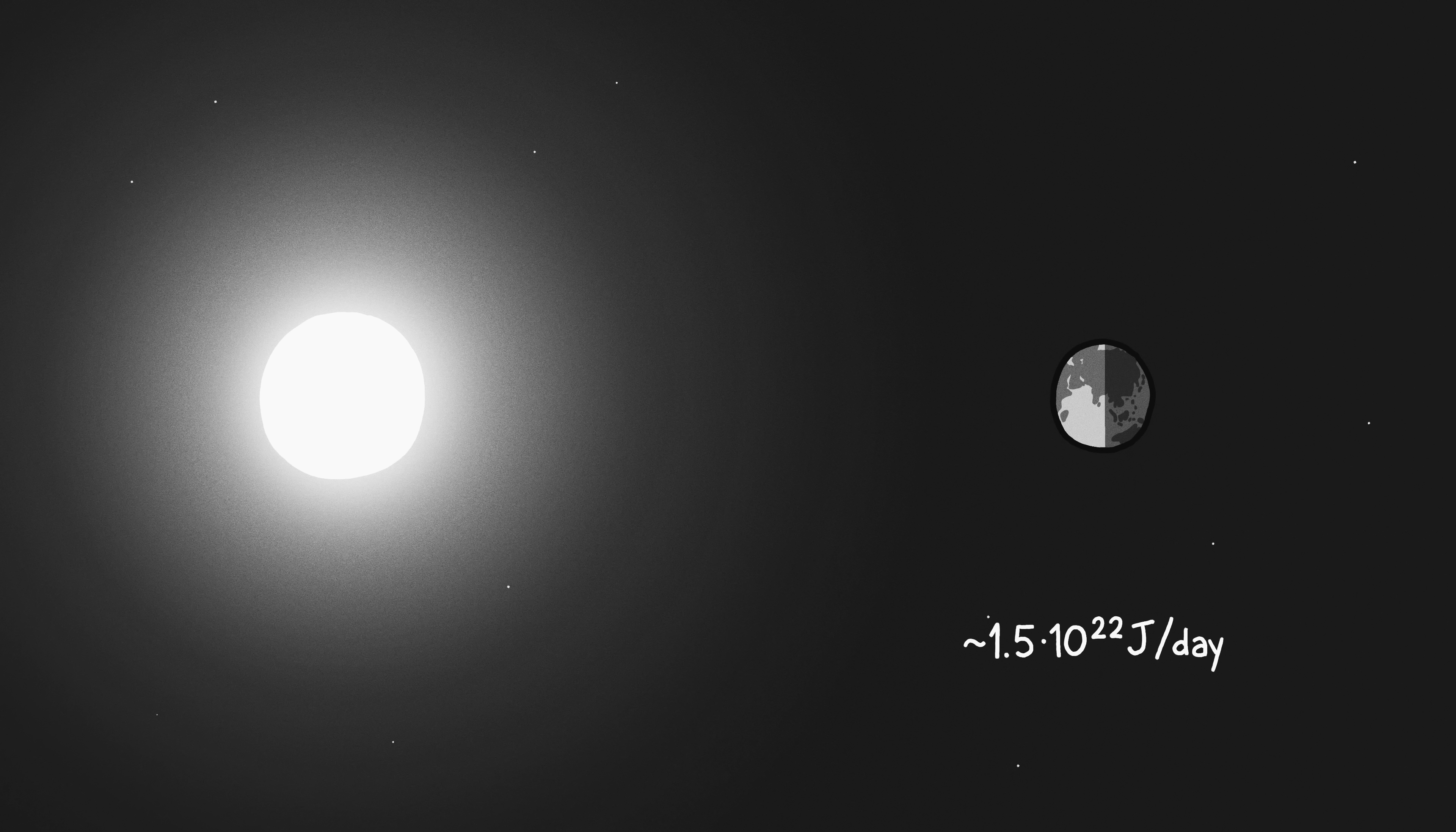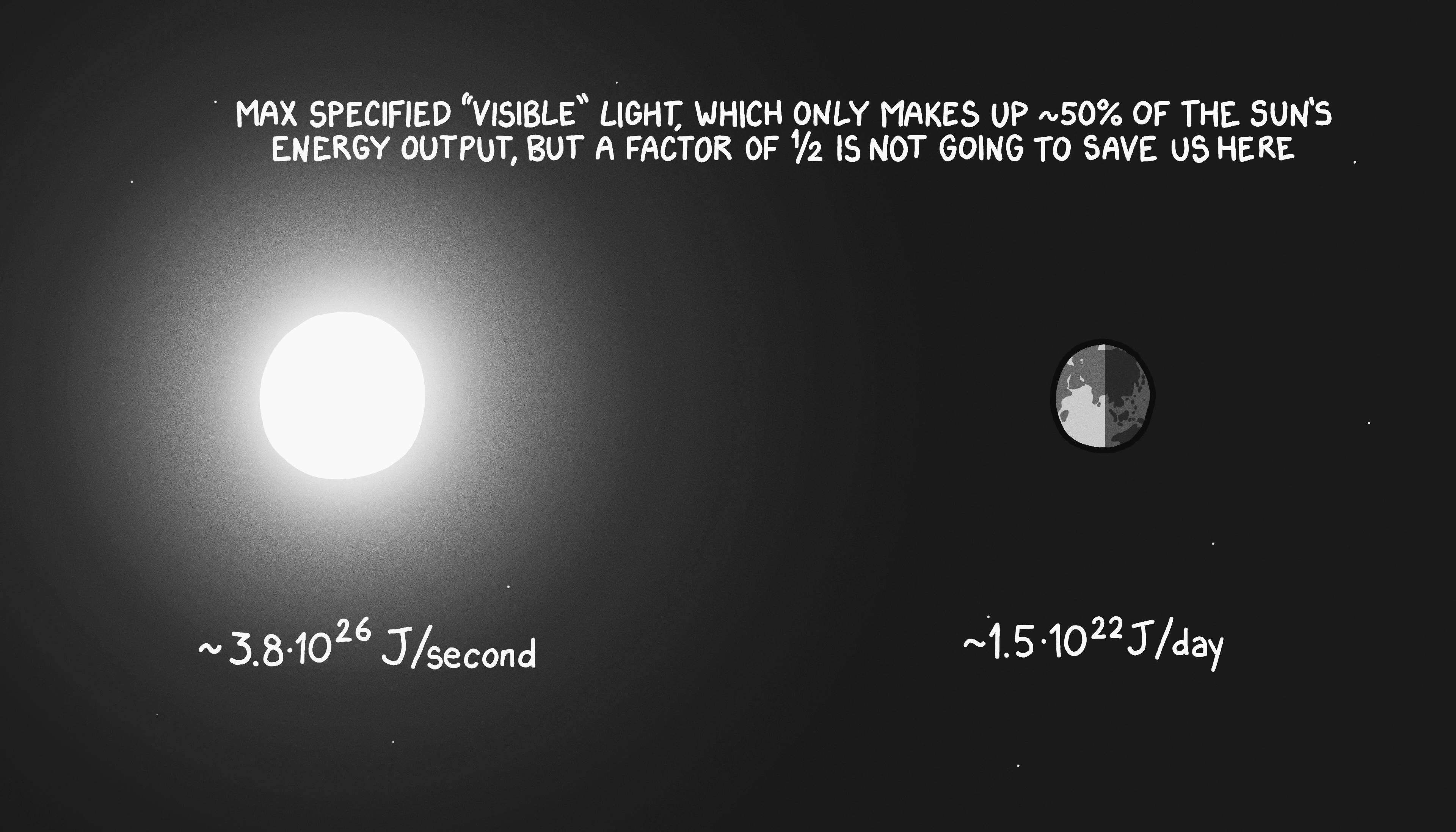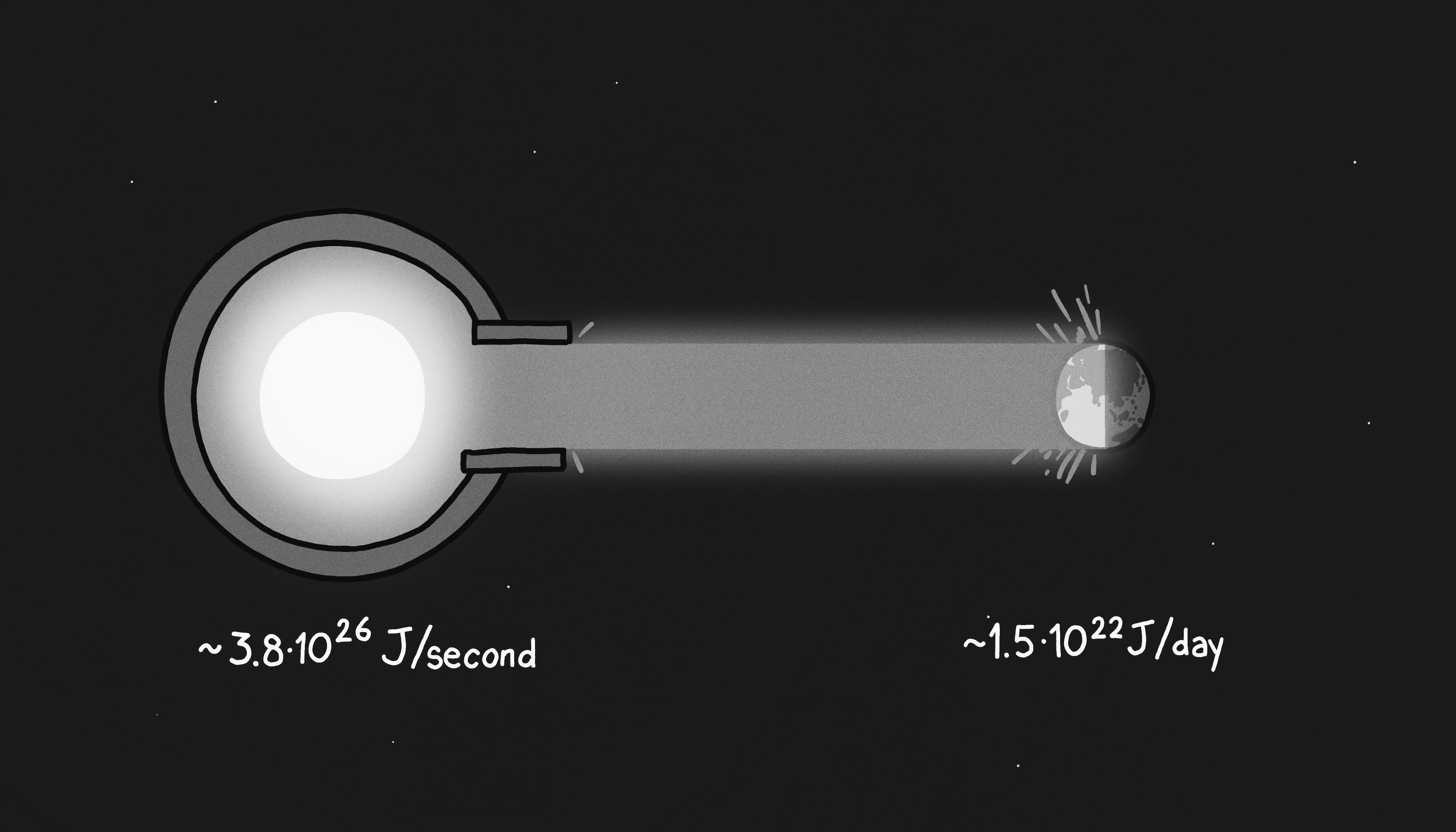You would just stop being biology and start being physics. The Earth receives about 0.004% as much energy from the sun in an entire day as the sun emits every second. If Max's beam were only focused down narrowly enough to cover the entire Earth, it would still deliver almost 2 billion times the normal amount of solar power to each point on the Earth's surface.